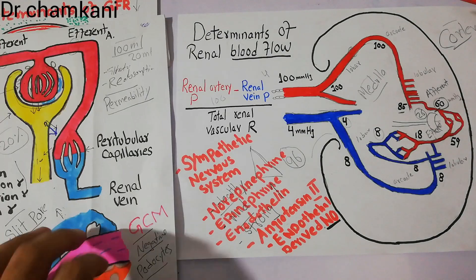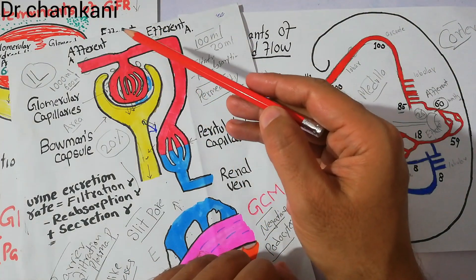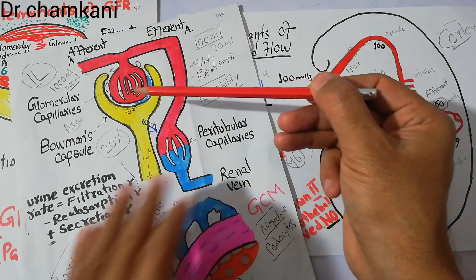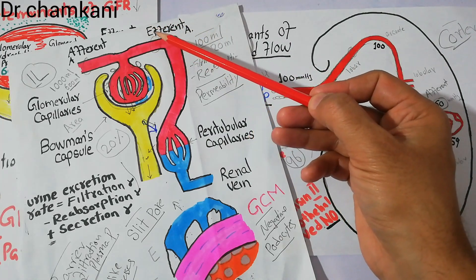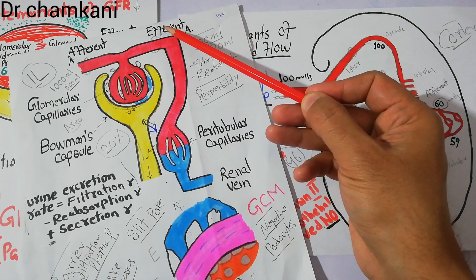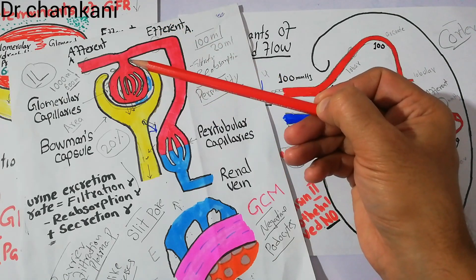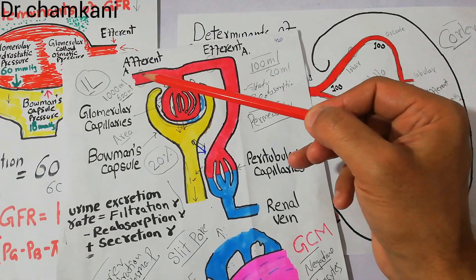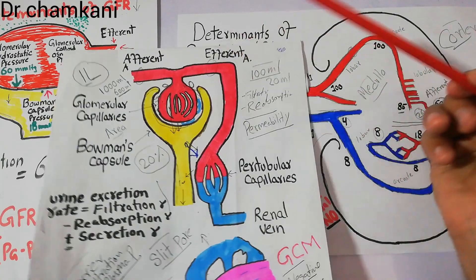When the afferent and efferent arterioles get constricted, it may increase or decrease the filtration process and the GFR. With angiotensin 2, it preferably constricts the efferent arteriole and tries to maintain GFR by increasing it. But the sympathetic system, norepinephrine, and epinephrine constrict both arterioles and decrease renal blood flow and GFR.